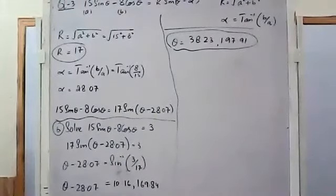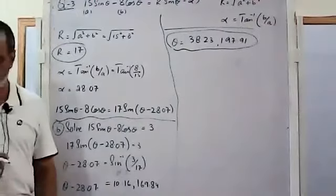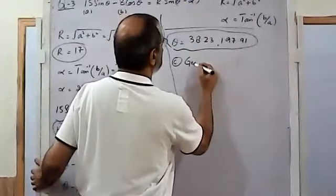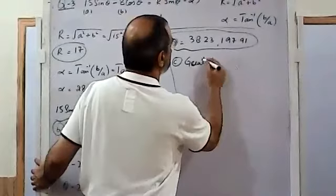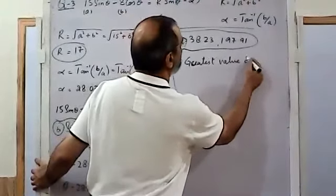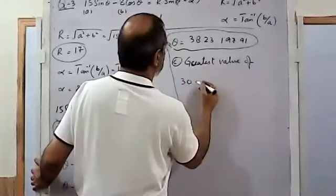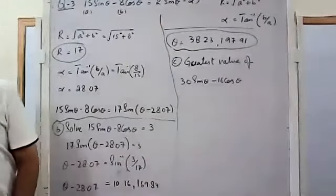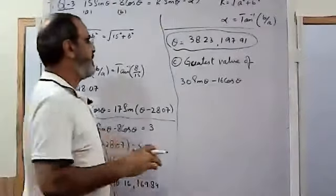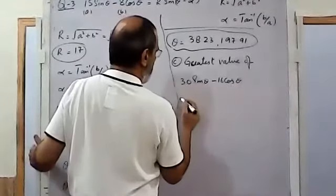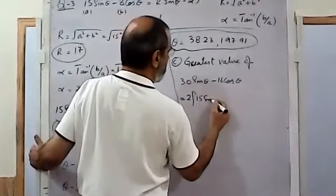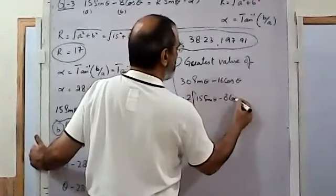Part (c) of question 3 asks us to find the greatest value of 30sinθ - 16cosθ. I take 2 as a common factor from this expression, which gives 2(15sinθ - 8cosθ).